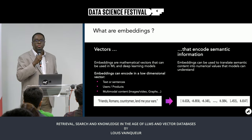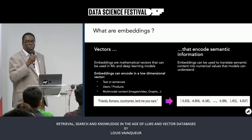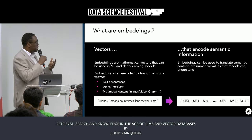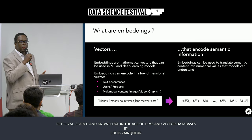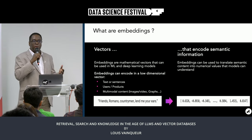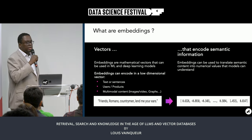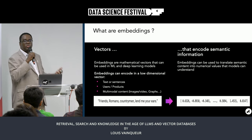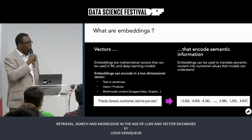They are mathematical vectors that can be used in machine learning or deep learning models. They can encode — represent — some text, some images, some video, some audio into a dense vector of lower dimensions. If you take the English language, you would have literally millions of words, and a naive approach would produce immensely large vectors. What you want to do is reduce the dimensionality so that you can do efficient computation on them.